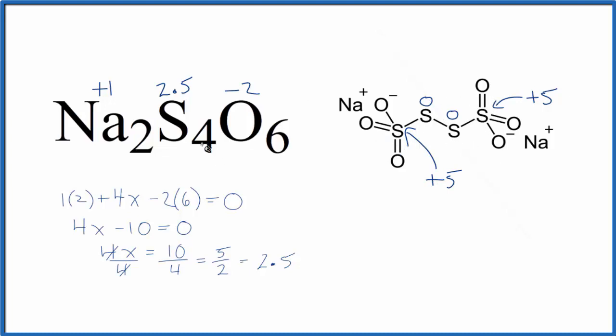The point is, we have an average oxidation state for the sulfur, but because these sulfurs are bonded to different things, they do have individual oxidation states. We have four sulfurs, one, two, three, four, and a total of five plus five is ten. That's where that ten over four comes from. That gives us that 2.5 as the oxidation state for the sulfur here in Na2S4O6.